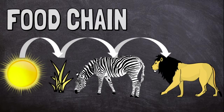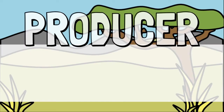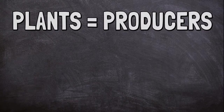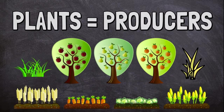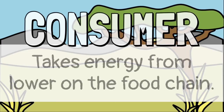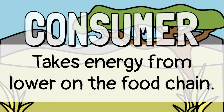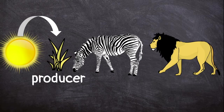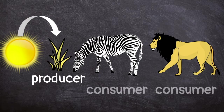There are names to help describe different positions in the food chain. A producer makes the energy for the ecosystem. Plants are the producers in any food chain because they turn sunlight into energy. Consumers don't make energy — they just take it from lower links on the food chain. Animals are consumers. In the African grasslands example, the zebra and the lion are both consumers.